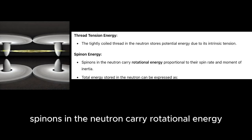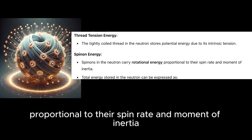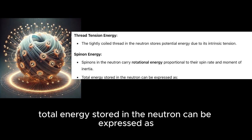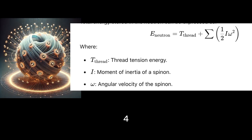Spinon energy. Spinons in the neutron carry rotational energy proportional to their spin rate and moment of inertia. Total energy stored in the neutron can be expressed as E_thread plus E_spinon.